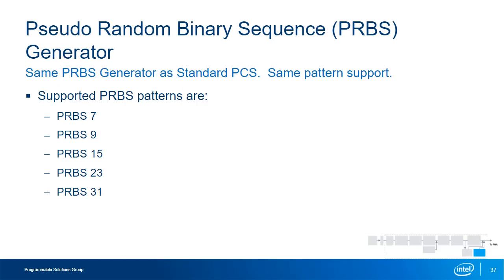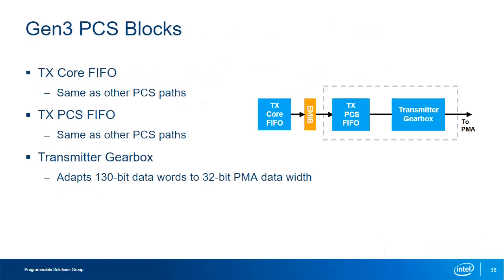The PRBS generator in the Enhanced PCS is shared with the Standard PCS, supporting the same five PRBS patterns. The PCI Express Gen3 PCS is in parallel with the Standard and Enhanced PCSs and is used specifically when implementing a Gen3 interface. Its blocks are the TX PCS FIFO, the TX Core FIFO, and the TX Gearbox. The PCS Core Interface provides the same functionality as in the other PCS paths. The TX Gearbox adapts the 130-bit block width used by the PCI Express Gen3 standard to the 32-bit width of the PMA by converting data words along with skip characters into 32-bit segments.